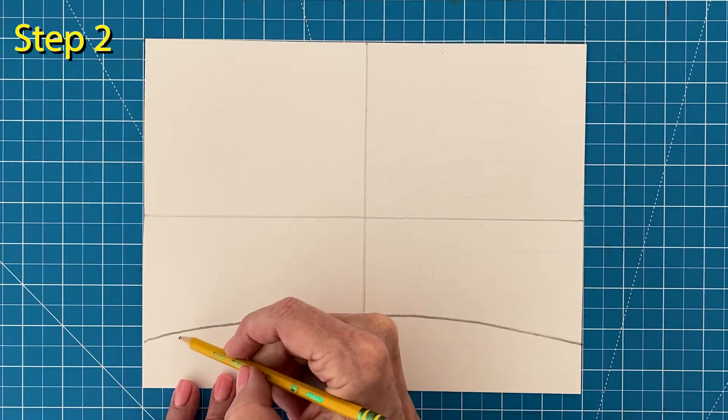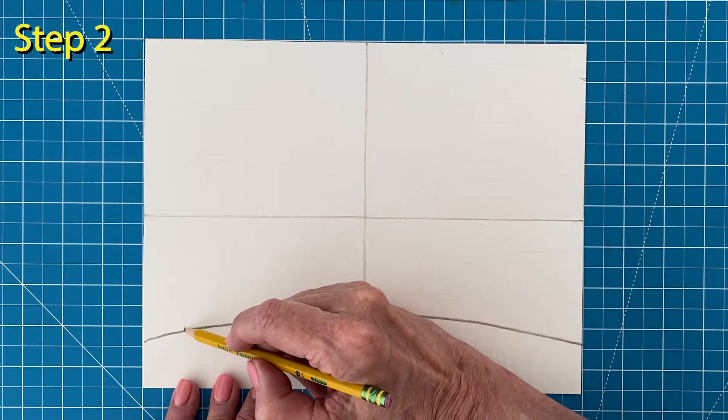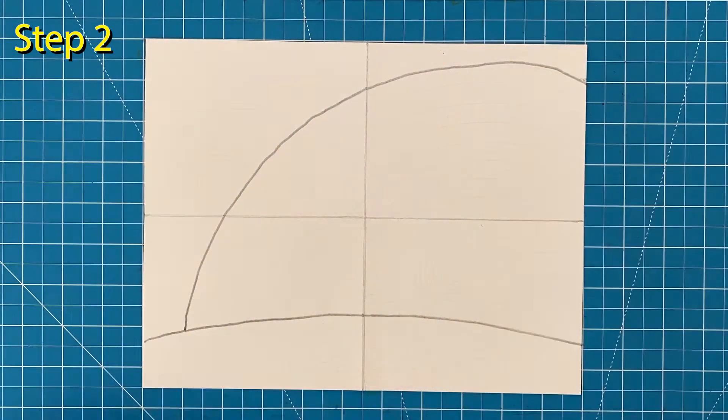Step number two, mark where the top of the rainbow starts and stops. Connect the marks with a nice large curve.